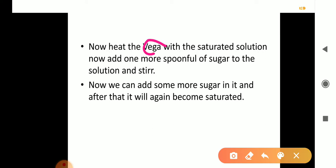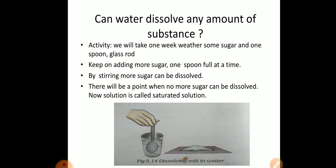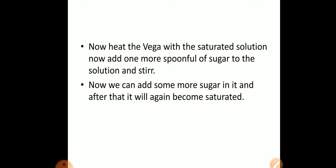When you heat the saturated solution, one more tablespoon of sugar can be added and dissolved. Then again the solution becomes saturated. So the answer to the question is: water cannot dissolve any amount of substance — it can dissolve only a particular amount, after which it becomes saturated. However, by giving heat to the solution, the saturation point increases slightly, and then after that it will again become saturated.